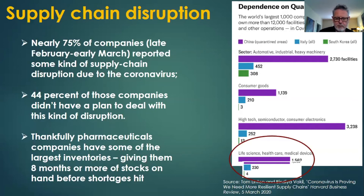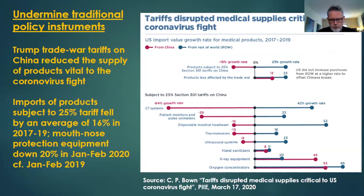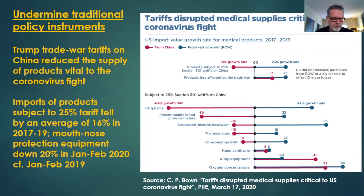Thankfully, pharmaceutical companies have some of the largest inventories, giving them some eight months or more of stocks before shortages hit. The other thing that happens, though, is that trade policy conducted with old-fashioned instruments no longer works at all. With Trump trade war tariffs on China, imports of products subject to 25% tariffs fell by an average of 16% in 2017–19. Mouth-nose protection equipment — the masks important for health workers dealing with the pandemic — are down 20% year on year.